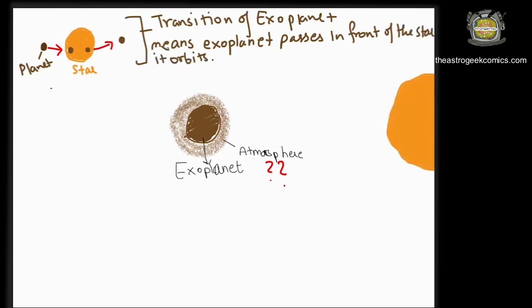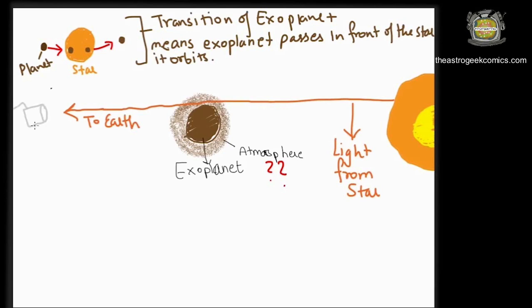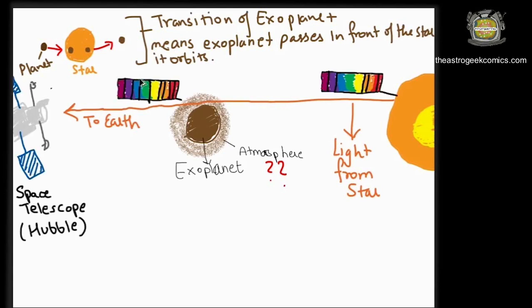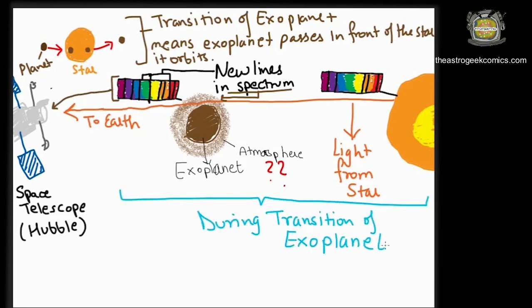During the transitioning of the exoplanet, the light from the star passes through its atmosphere before reaching us. The atmosphere's elements will absorb specific energies from the continuous spectrum. So before the light reaches us, it would have some extra absorption bands which were not present there because of the star.